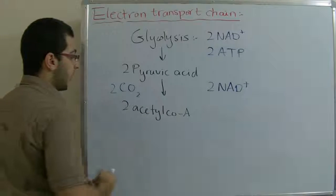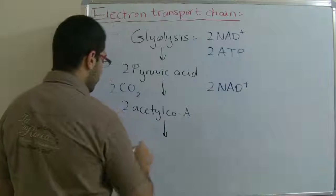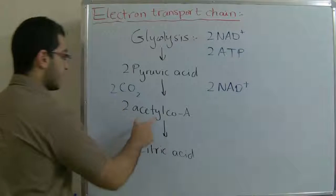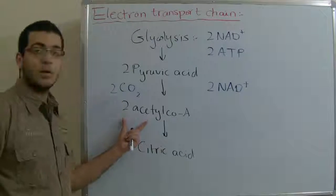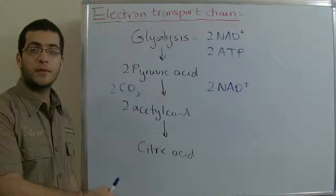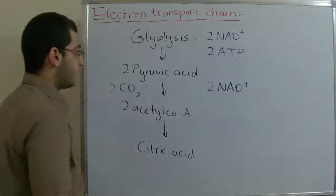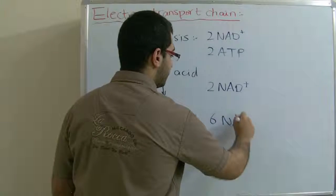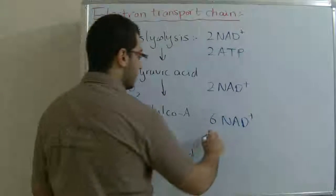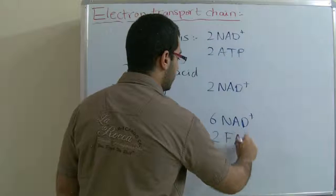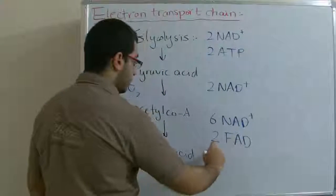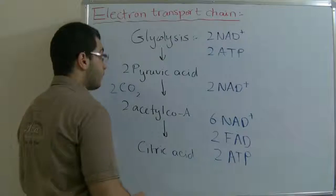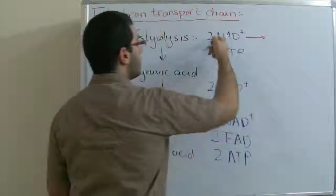Then the Acetyl-CoA undergoes the Krebs cycle to get the citric acid molecules and we said that the cycle is repeated twice because each Acetyl-CoA enters the cycle independently and when the first finishes the second goes to the cycle. So here we have three NAD plus by two gives six NAD plus, one FAD by two to get two FAD, and one ATP by two to get two ATP molecules.